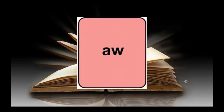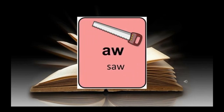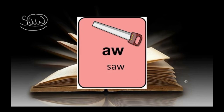The next set of letters is AW. AW, saw, AW. In this case, I have the word saw. I can mark it by writing a circle around my AW and marking the double vowel sound underneath. Notice that in this case the AW is at the end of the word saw.